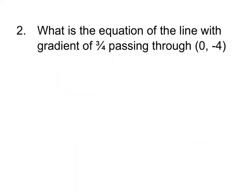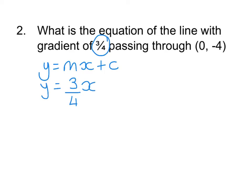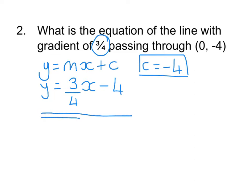Next example: what is the equation of the line with a gradient of 3 quarters passing through 0, negative 4? We know the equation of a line is y equals mx plus c — this is just substituting in what we've been told. Your m value is 3 quarters, so y equals 3 quarters x. In an exam, always write down c equals minus 4 before you substitute it in, because if you write the wrong c value and substitute straight into the formula, you could lose two marks. Since c is negative, that becomes take away 4. So the equation of the line is y equals 3 quarters x minus 4.